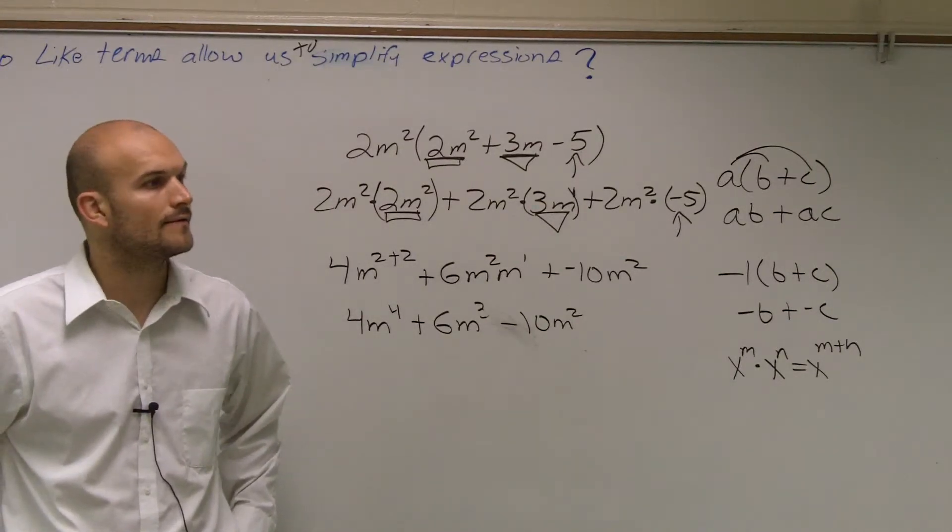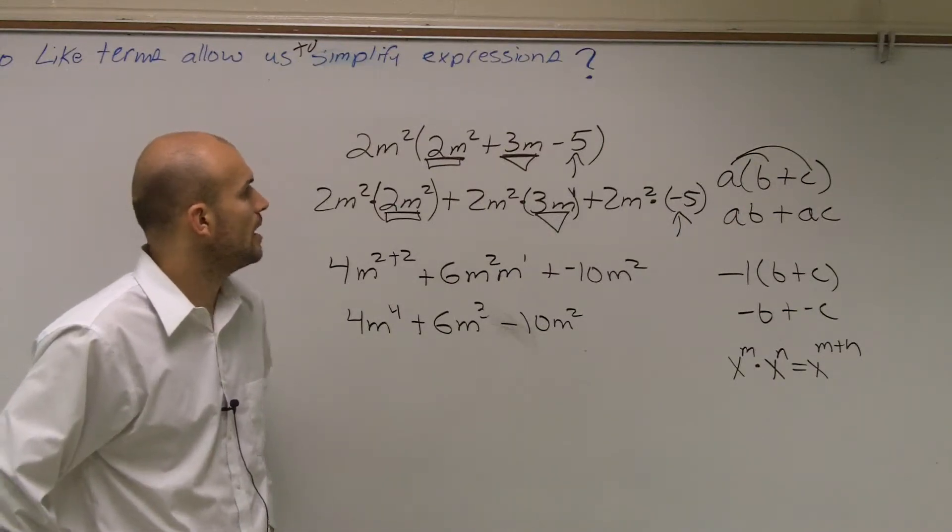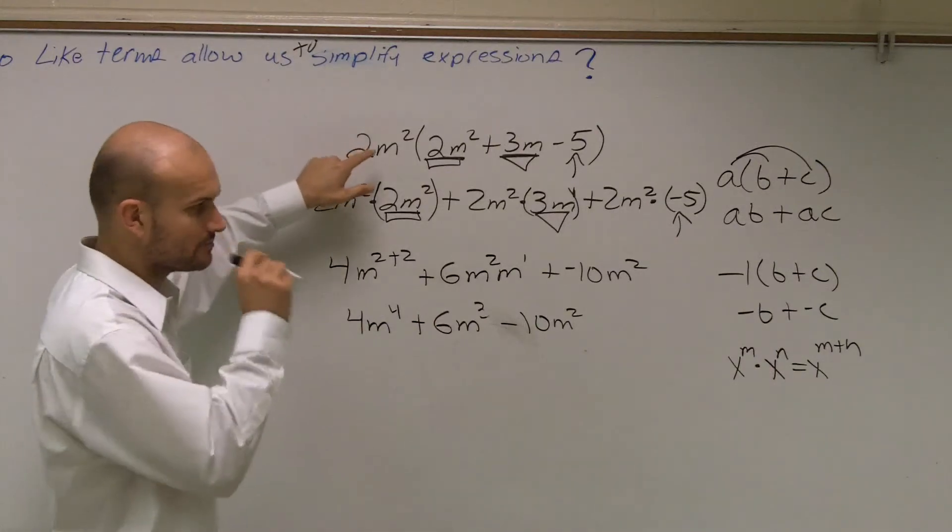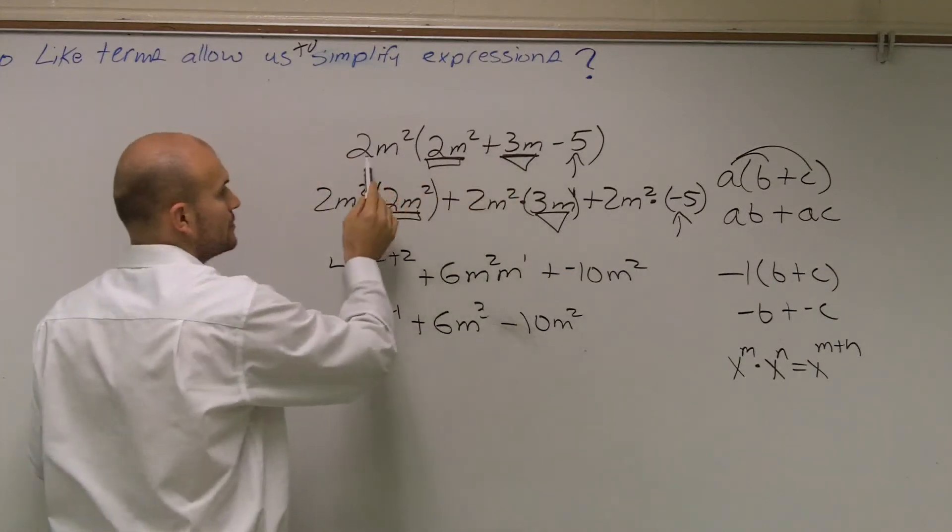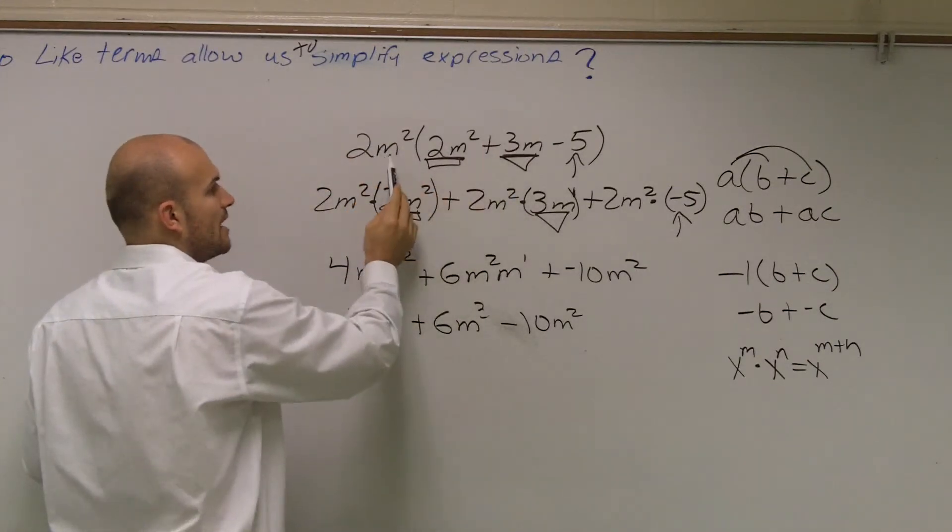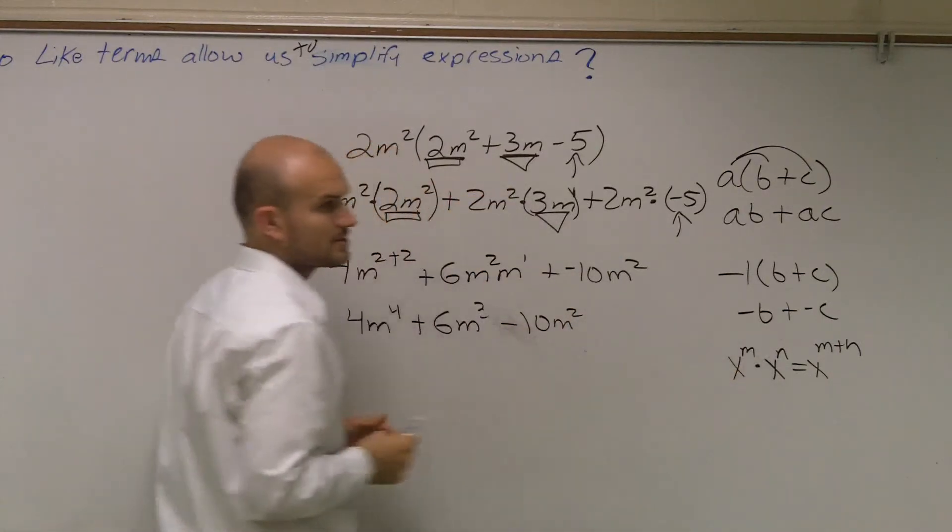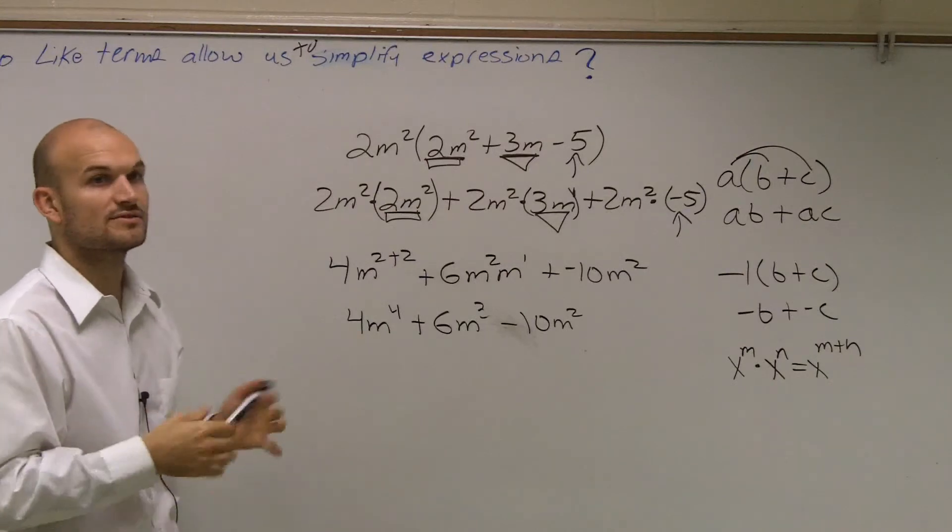How can you multiply 2m squared times 2m squared? Remember, you can multiply 2m squared times 3m. You just multiply your coefficients, and then when you multiply m squared times m, you follow your rule of exponents. So whatever coefficients, multiply them.